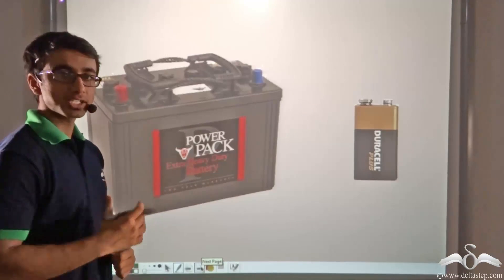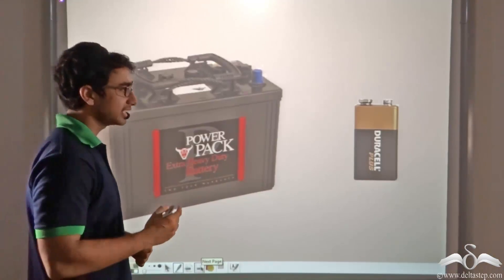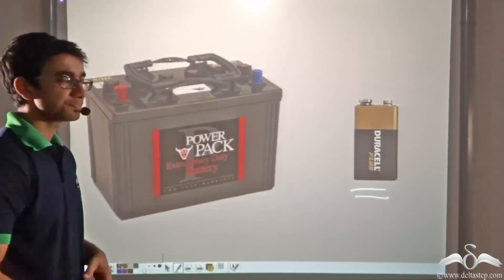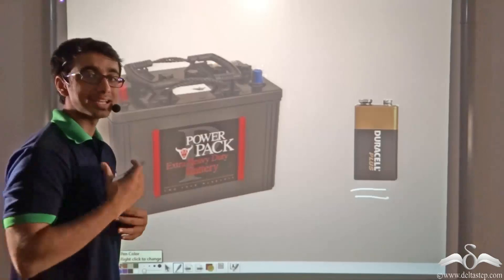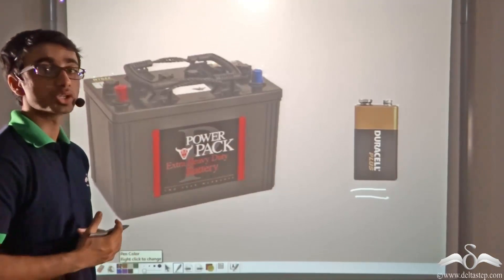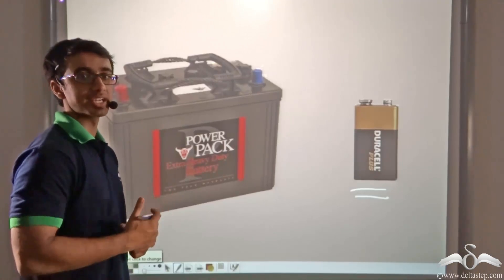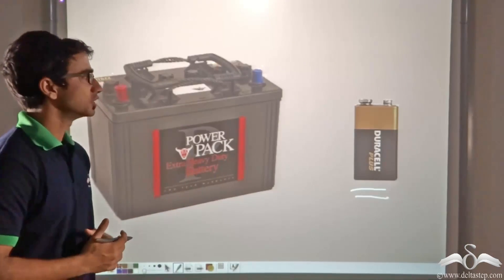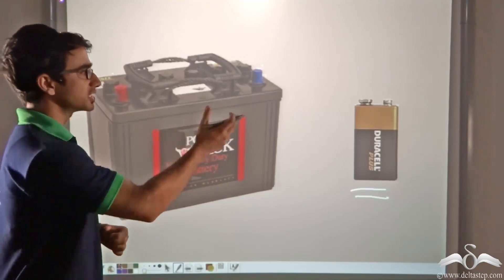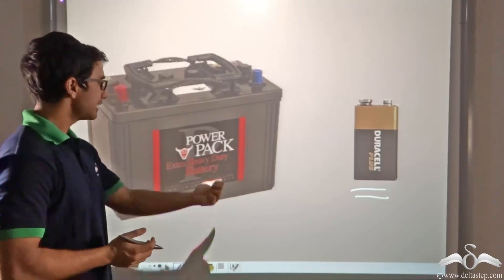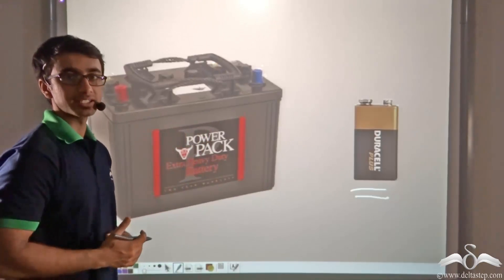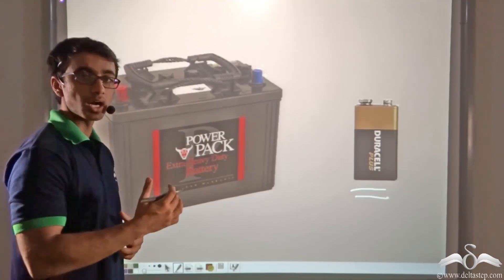The torch is able to provide us with light because it contains a battery or a cell. The work of this cell is to provide electricity to the bulb of the torch, and thereby the bulb is able to give out light, which we use during load shedding. In this picture you will find two different kinds of batteries — the first is a regular battery and the second, the bigger one, is a car battery, which gives power to a car.